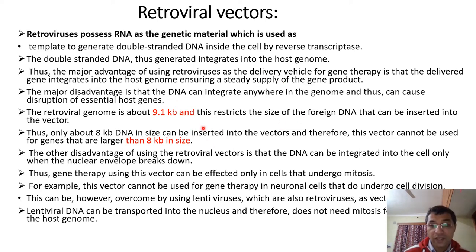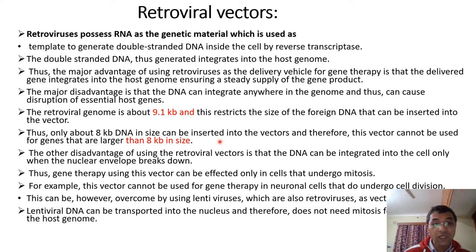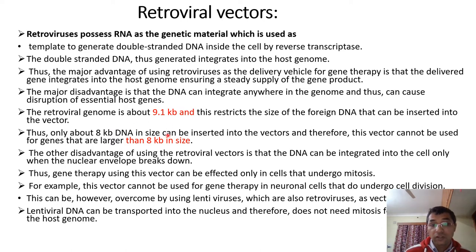The size of the retroviral genome is 9.1 kilobase pairs, meaning the capacity of this virus is to transmit less than 9 kilobase pairs of genome. For genes up to 8 kilobase pairs, transmission is done easily, but for genes larger than 8 kilobase pairs, they cannot transmit properly. So the maximum gene size for transmission by retroviral vectors is 8 kilobase pairs.